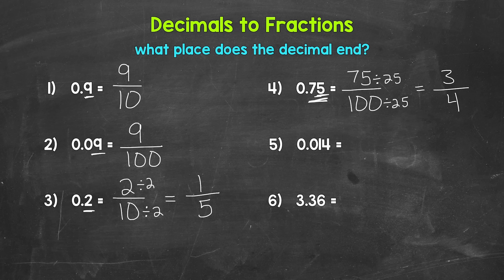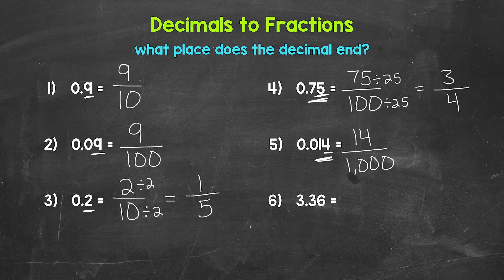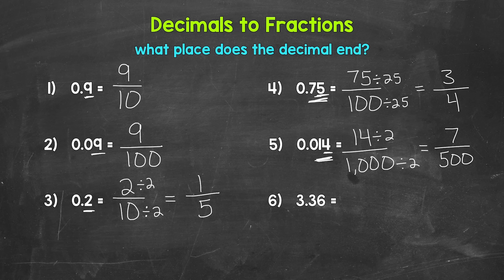Moving on to number five, we have 0.014, 14 thousandths. We have 14 to the right of the decimal, and this ends in the thousandths place. So 14 is our numerator and 1,000 is our denominator. So 14 over 1,000. We can simplify with a greatest common factor of 2: 14 divided by 2 is 7, and 1,000 divided by 2 is 500. So 7 over 500, seven five-hundredths — that's in simplest form.